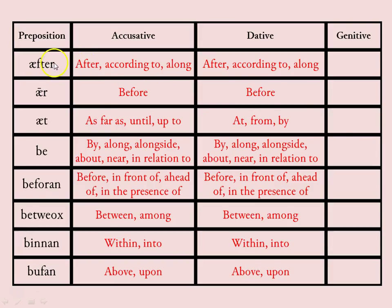The next couple of pages give a list of very commonly used prepositions, starting with 'aefter' — meaning 'after,' 'according to,' 'along' — the same in both accusative and dative. 'Aer' — 'before,' same for accusative and dative. 'Aet' — meaning 'as far as,' 'until,' 'up to' in the accusative; but in the dative it means 'from,' 'by.' 'Be' — meaning 'by,' 'alongside,' 'along,' 'about,' 'near,' 'in relation to' — the same for dative. 'Beforan' — meaning 'before,' 'in front of,' 'ahead of,' 'in the presence of' — both dative and accusative are the same. 'Betweohs' — 'between,' 'among' — same for accusative and dative. 'Binnan' — 'within,' 'into' — same again. 'Bufan' — 'above,' 'upon' — same for both.